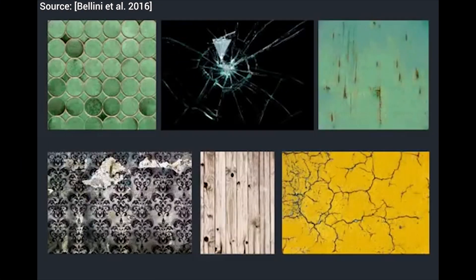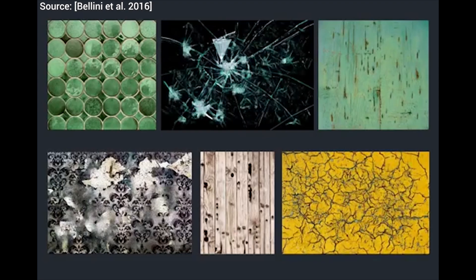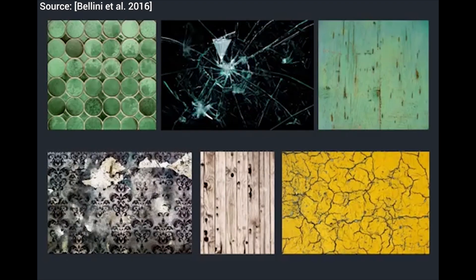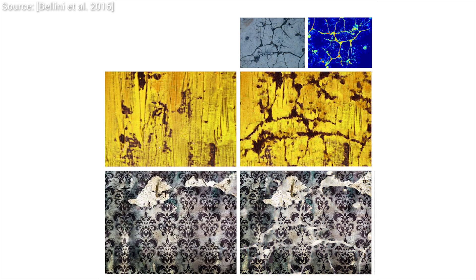Broken glass, cracks, age rings on a wooden surface — you name it. But we can also use this technique to transfer weathering patterns from one image onto another.